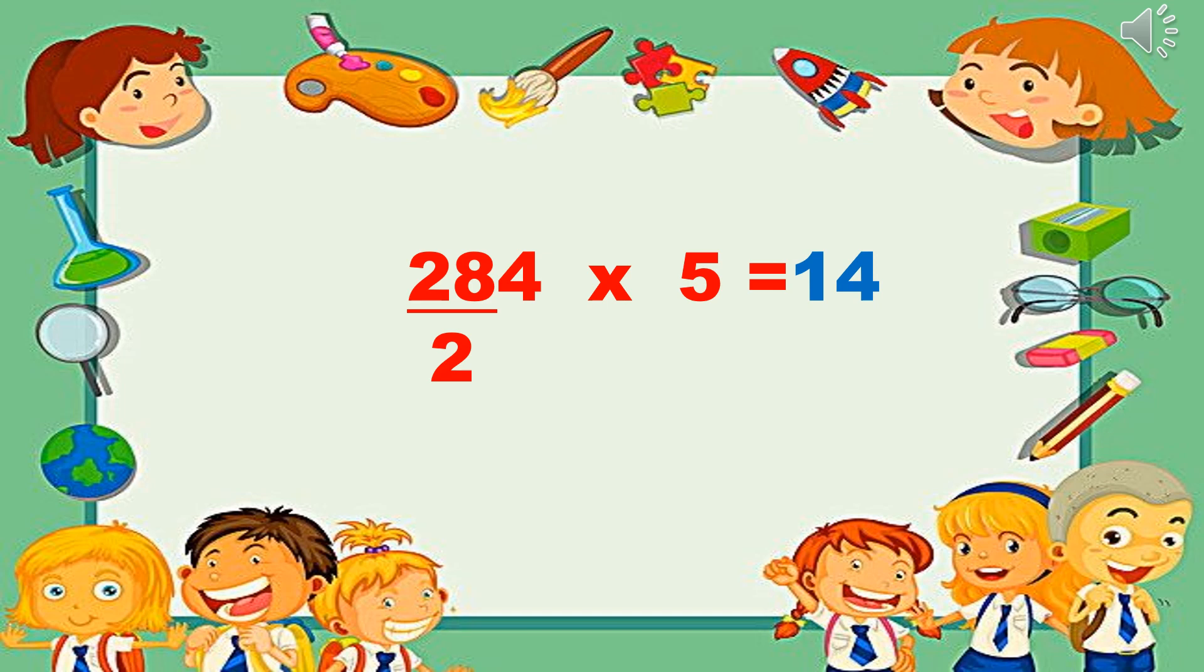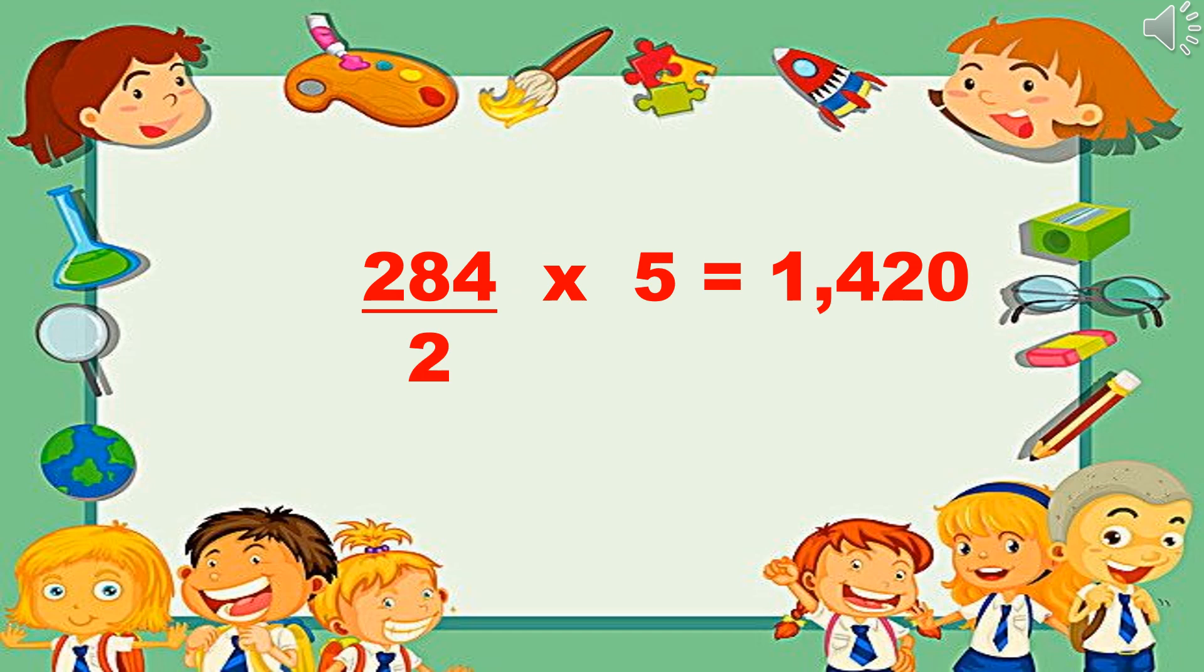28 divided by 2 or simply half of 28, we have 14. 4 divided by 2, we have 2. Then if there is no remainder, it is constant to add 0. Our answer is 1420.